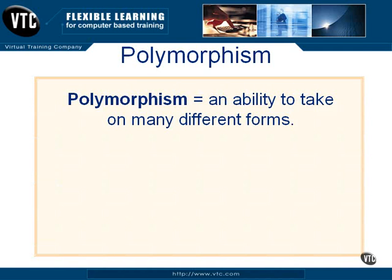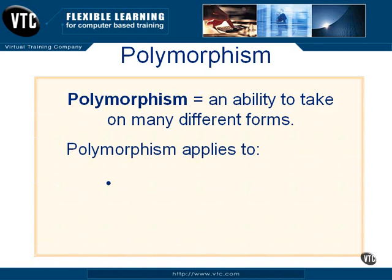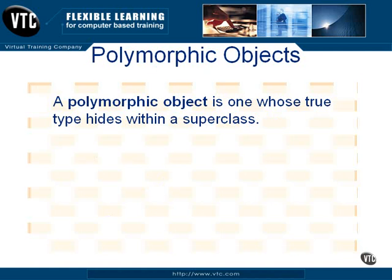Another object-oriented concept we'll look at is polymorphism. All that means is the ability to take on many different forms. Polymorphism can apply to objects, and it can also apply to operations. Let's look at some examples to see how.